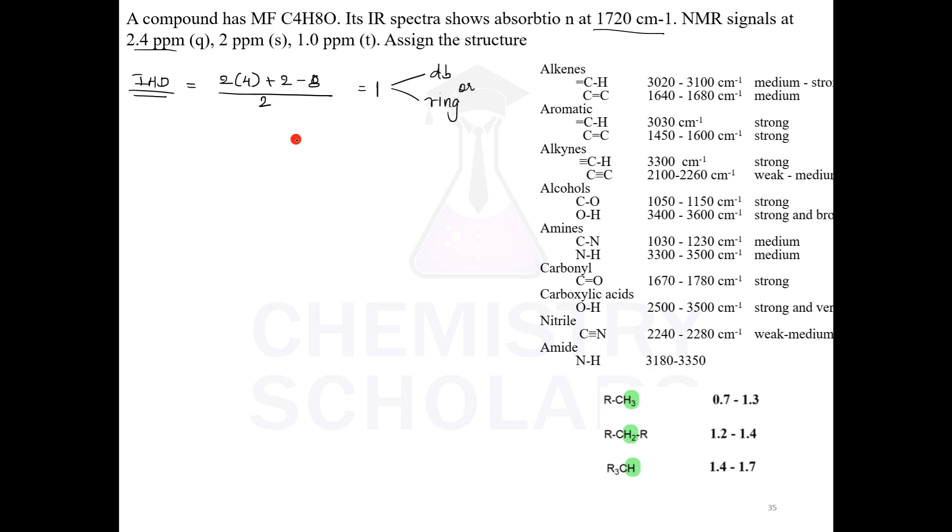Now we will see what exactly it should be. Extra information is given: 1720 cm inverse in IR. IR gives you value of functional groups. You have to remember where is 1720. Look here, it is here. What is present? Carbonyl group is present. 1720 means your compound is having a carbonyl group. If I am having a double bond here, my possibility of ring is ruled out. I am having a double bond. Double bond is assigned.